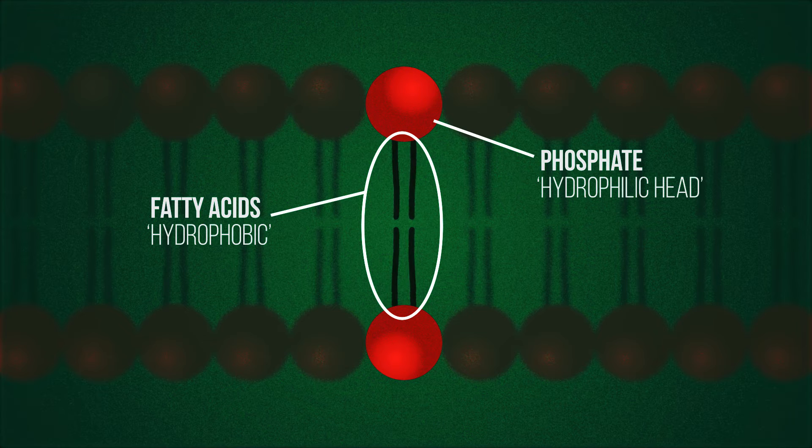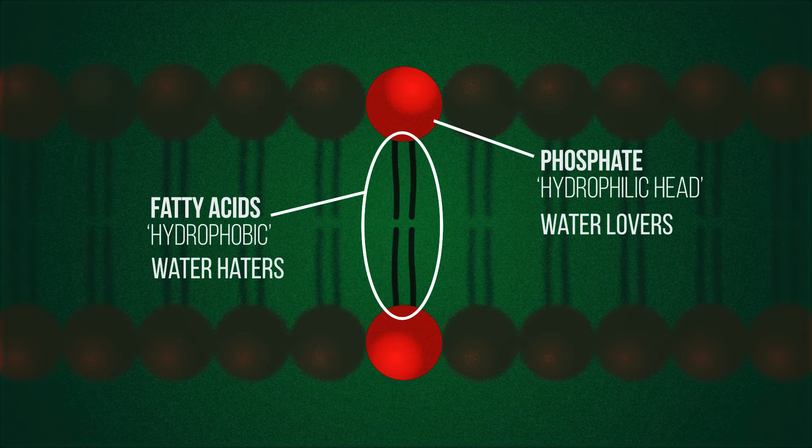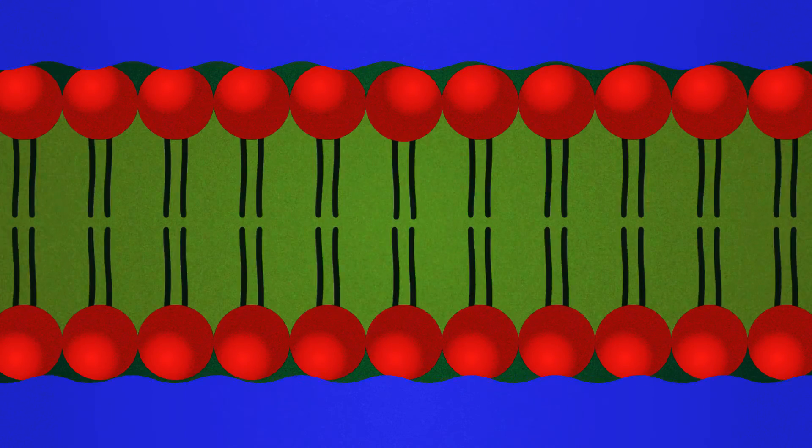This attraction and repulsion to water is why phospholipids arrange themselves into two rows in the cell membrane: water lovers and water haters. The membrane is exposed to water, mixed in with other things, on both the inside and outside of the cell, and so the water-attracted heads face outwards, with the water-repelled tails hiding on the inside.